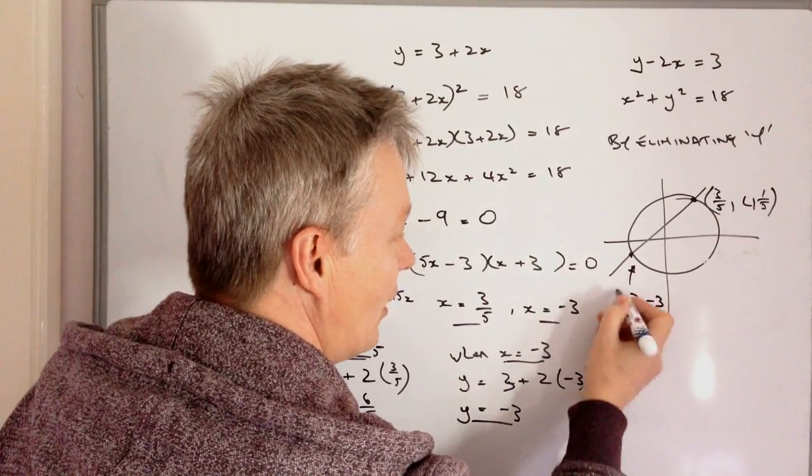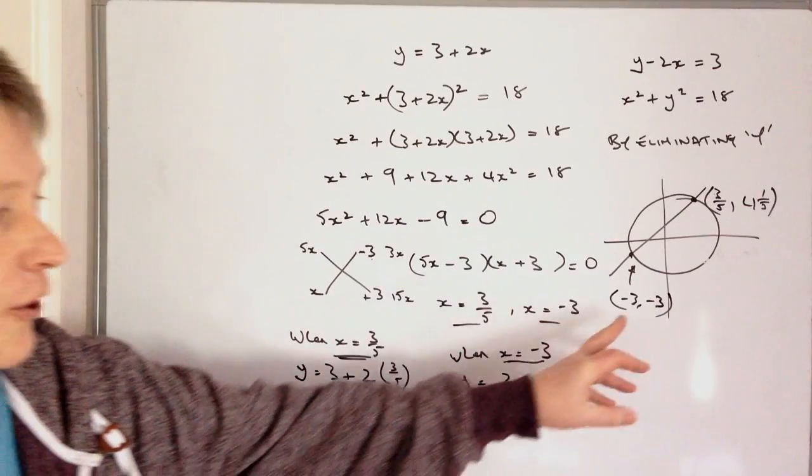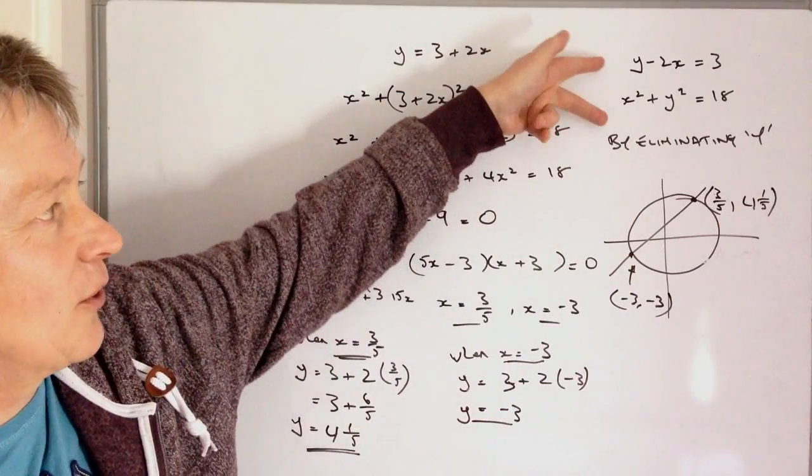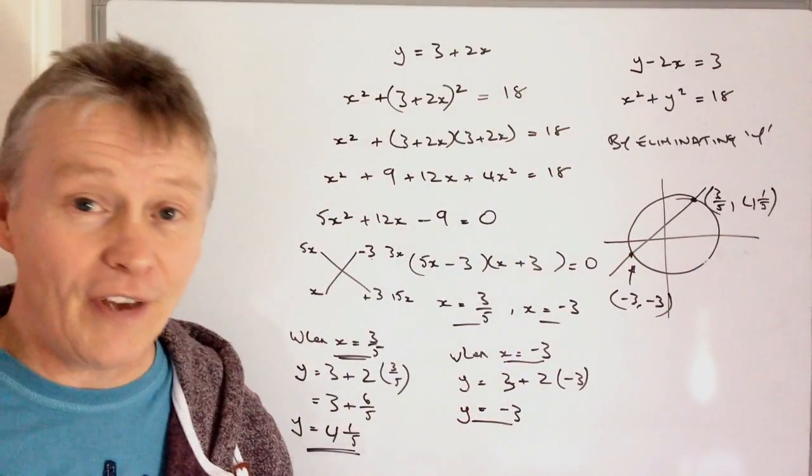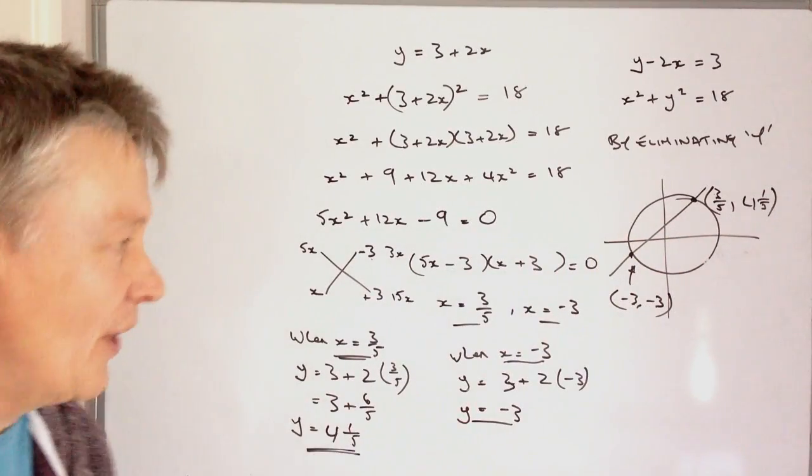Okay, so when x equals minus 3, y equals minus 3, which is this coordinate here. So that's going to be minus 3, minus 3. Okay, so that solves these two equations, and the values of x and y in those two equations are those.